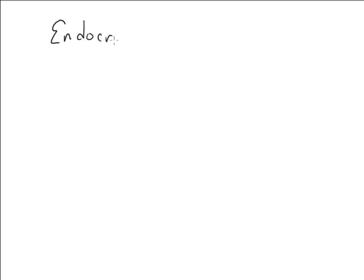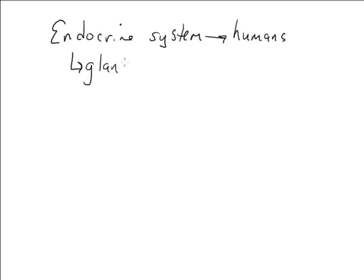What I want to do today in this video is give you a brief overview of what we call the endocrine system, in particular in relationship to humans. The endocrine system is really a series of anatomical structures called glands, and what these glands do is secrete chemicals called hormones.